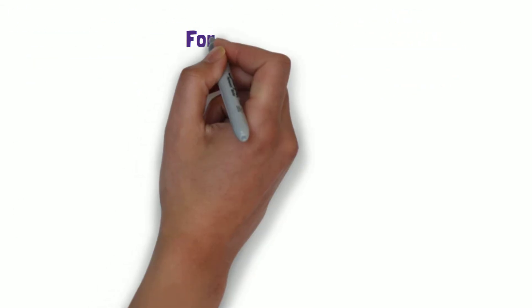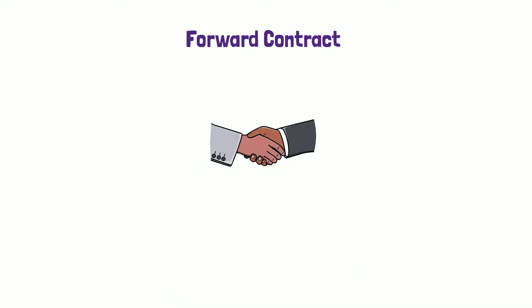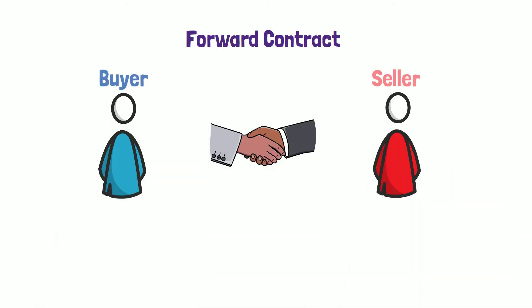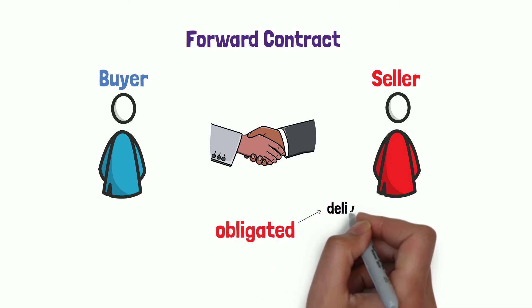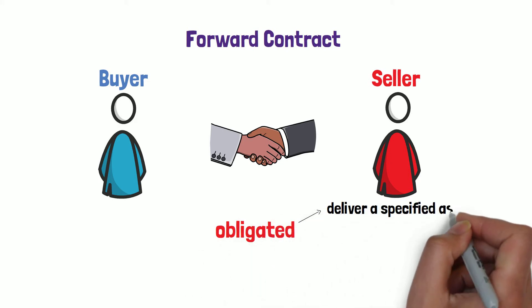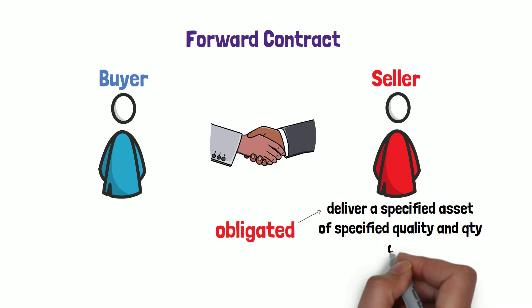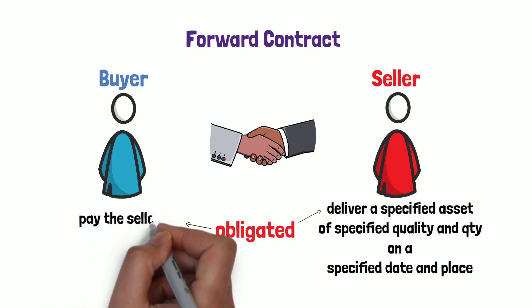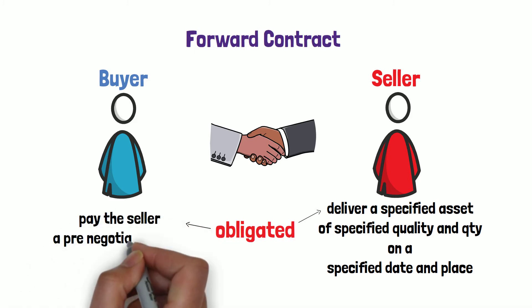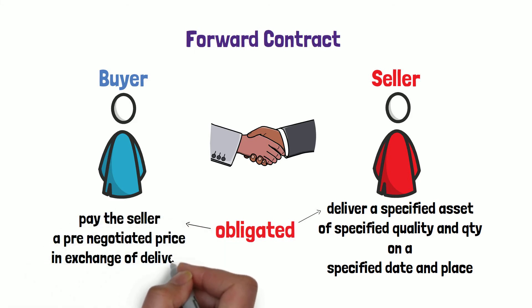So a forward contract is an agreement between a buyer and seller obligating the seller to deliver a specified asset of specified quality and quantity to the buyer on a specified date at a specified place, and the buyer in turn is obligated to pay the seller a pre-negotiated price in exchange for delivery.